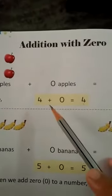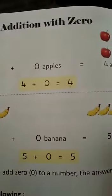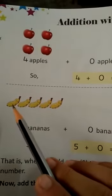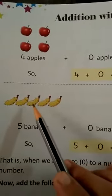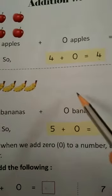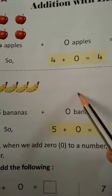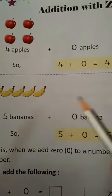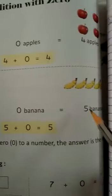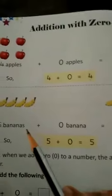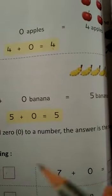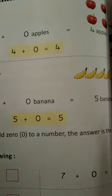Kisi bhi number ke saath jab hum 0 ko plus karenge, tho answer humara same number aata hai. Aise hi yahaan par. 1, 2, 3, 4, 5. How many bananas? 5. And there is 0 banana. It means nothing. No bananas there. Yahaan par koi bhi banana nahi hai. Tho humara answer kya aega? 5 plus 0 equal to 5. Aab humne 5 ke saath 0 ko plus kiya. Tho kya answer aega? 5 hi aega. Kiyonki 0 me kuch bhi nahi hai. Thik hai?